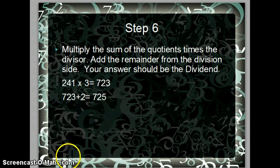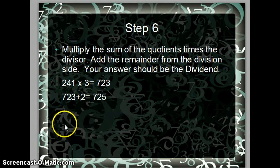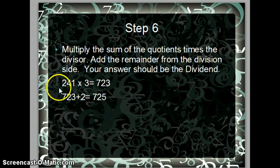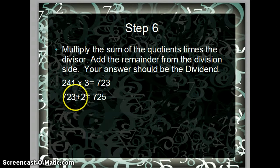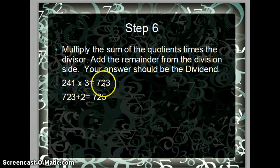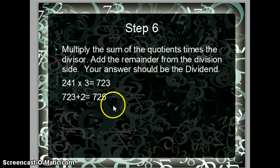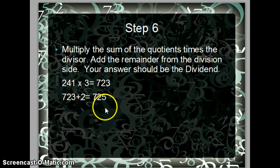In step 6, in the final step, you want to multiply your sum of the quotients, which is 241, times your original divisor, which is 3. And the answer is 723. But you are not done yet. Remember that little remainder of 2? You want to take that remainder and add it to 723.